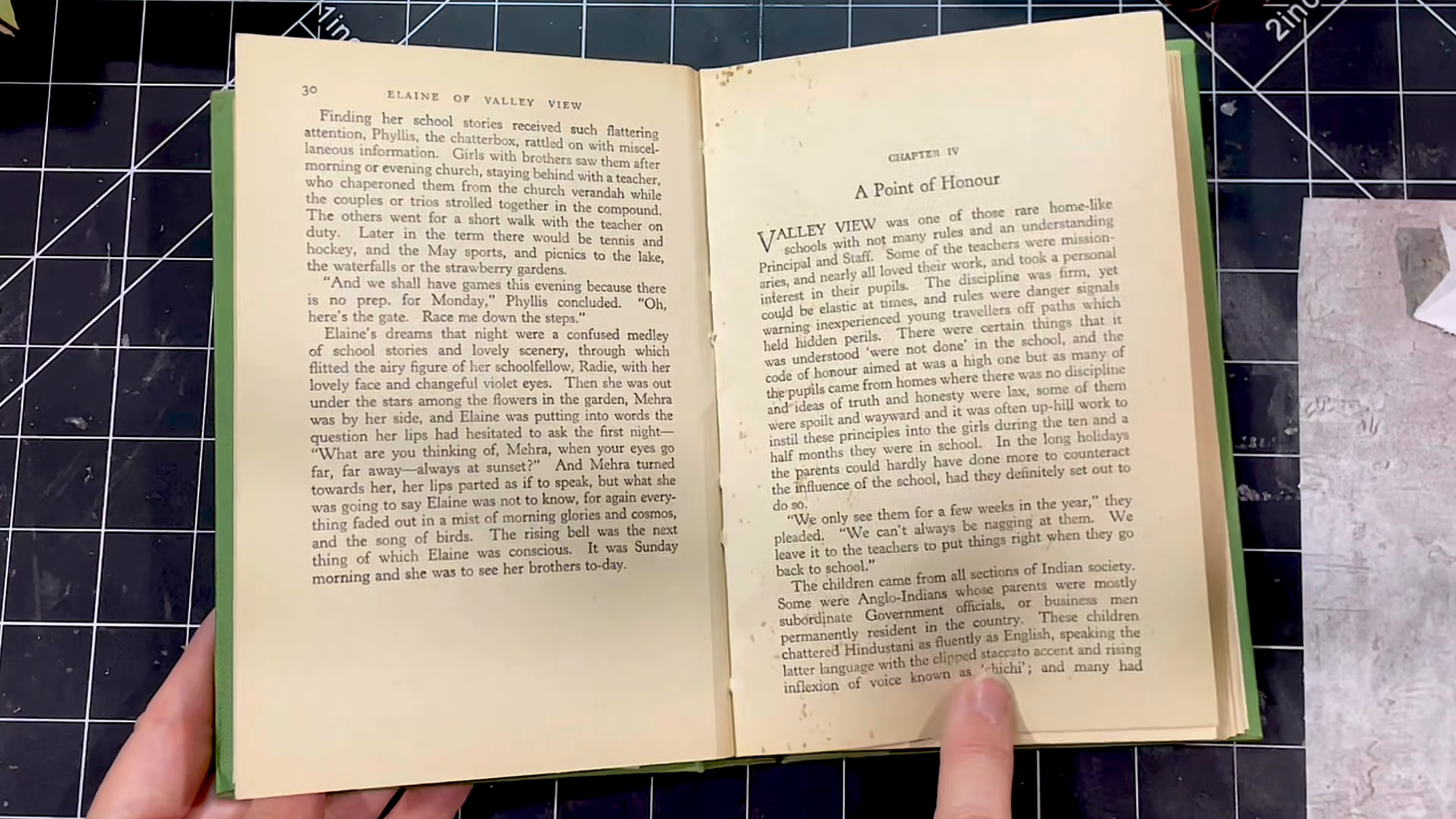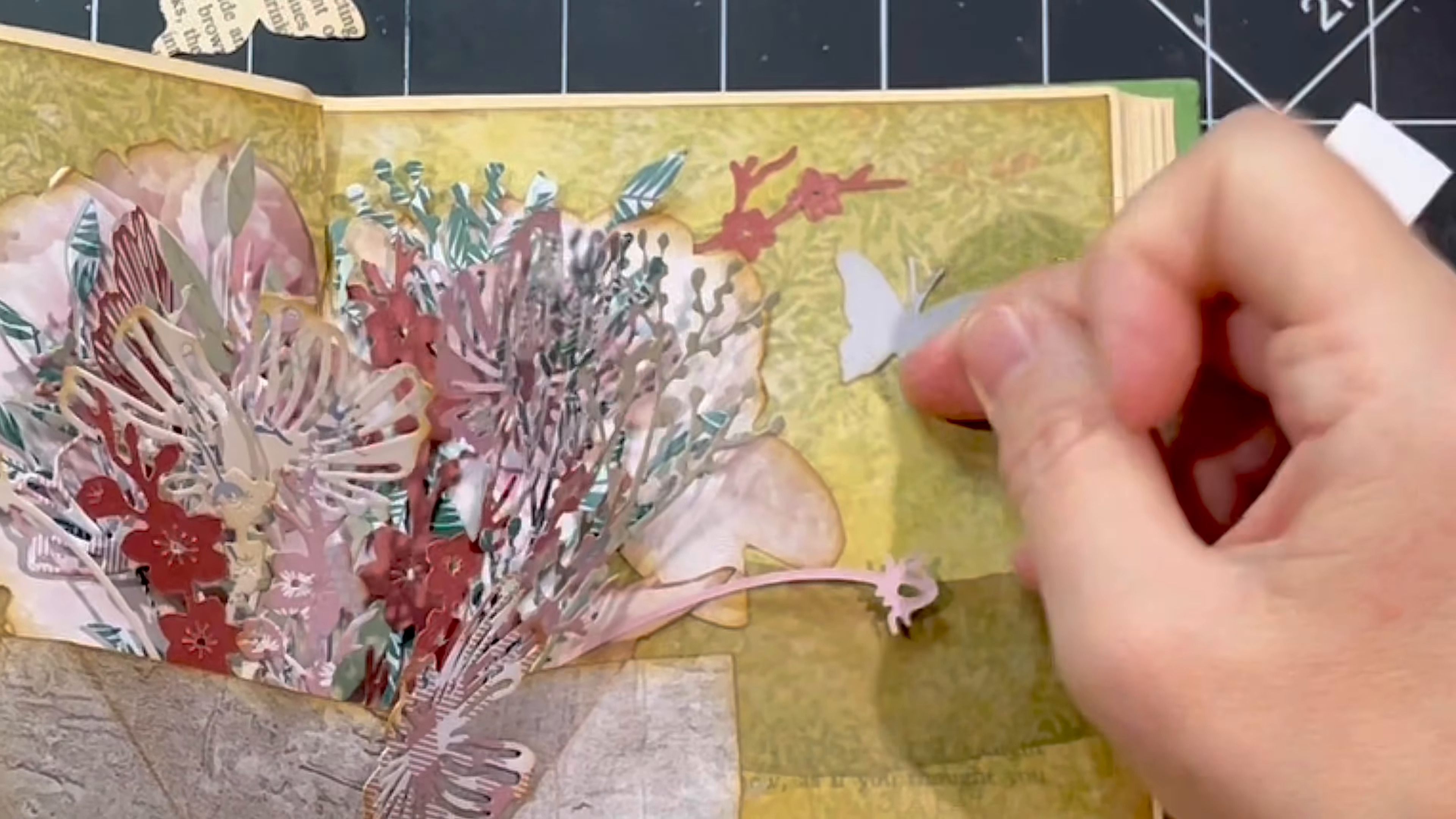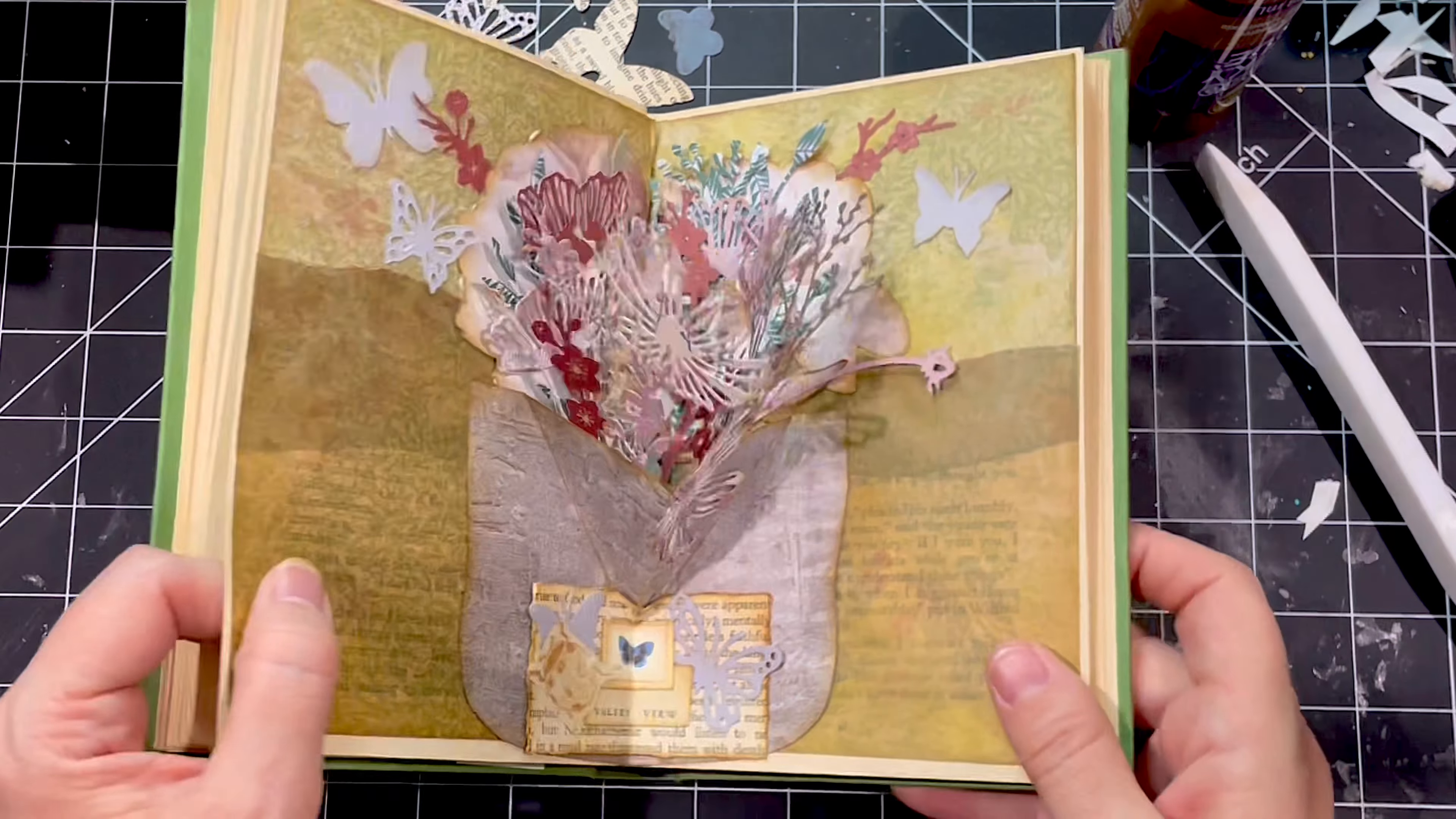So see how that just folds down and then you open up and you can see your little vase of flowers, which is a bit cute. I added some butterflies all around it, that sort of thing. It did work out quite well, but like I say, it definitely needed to be lifted.